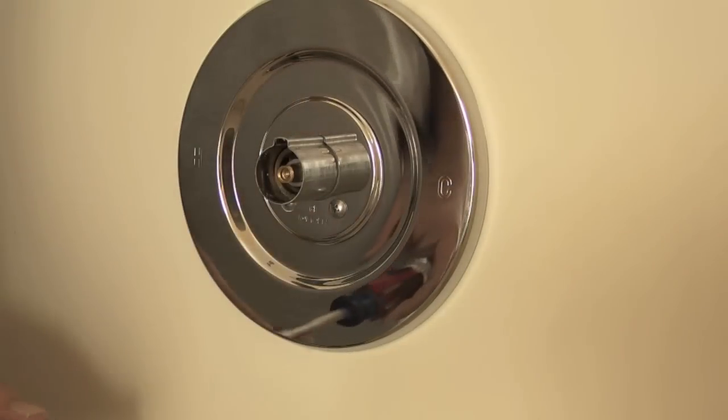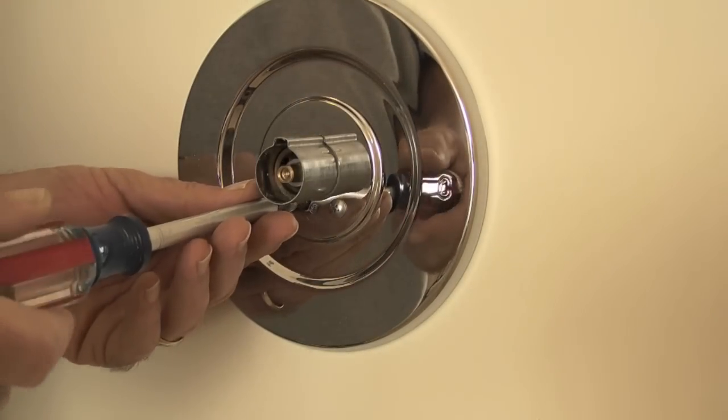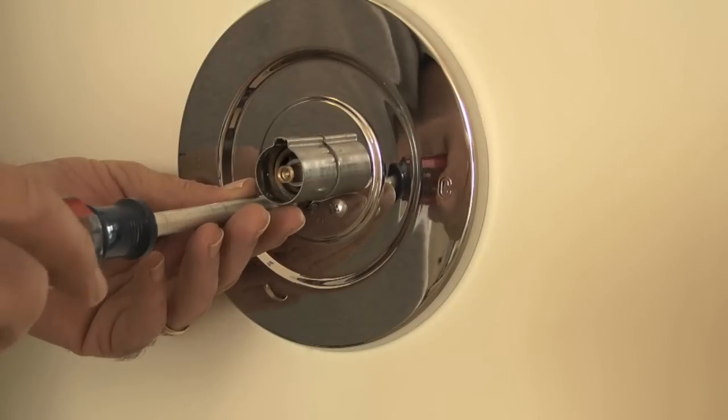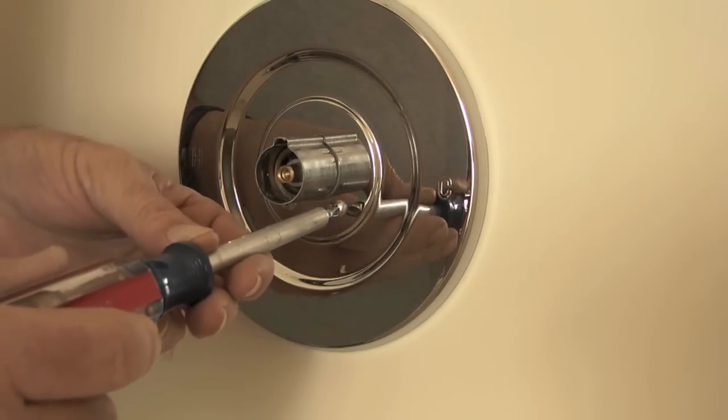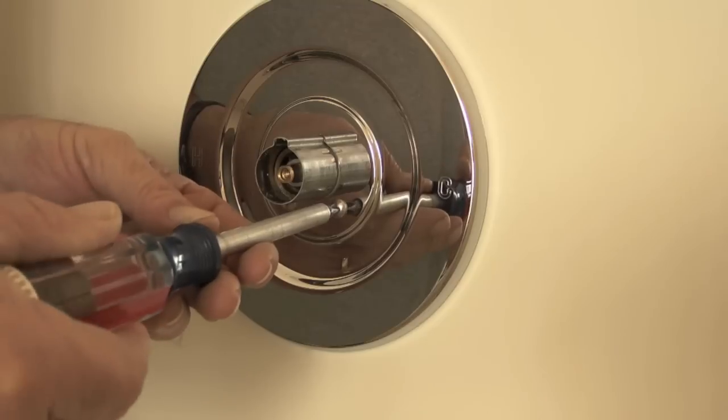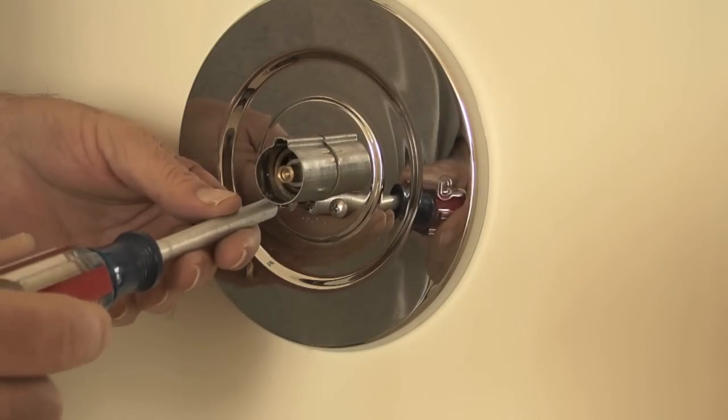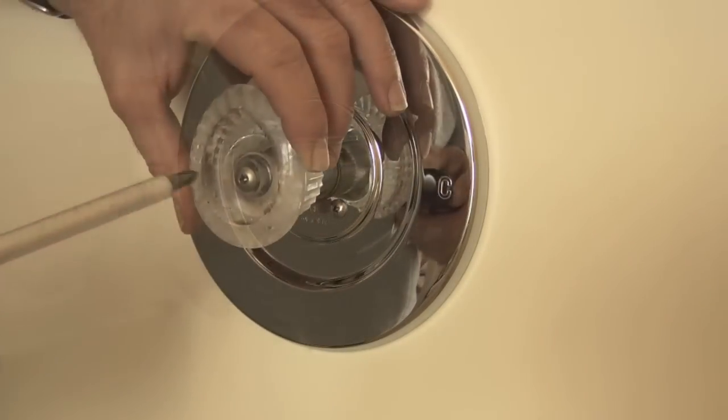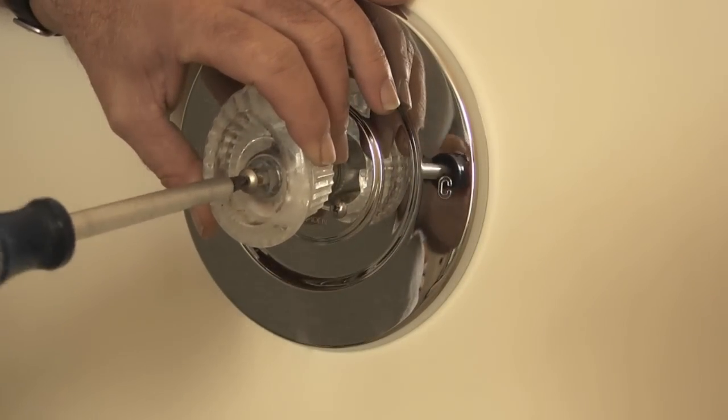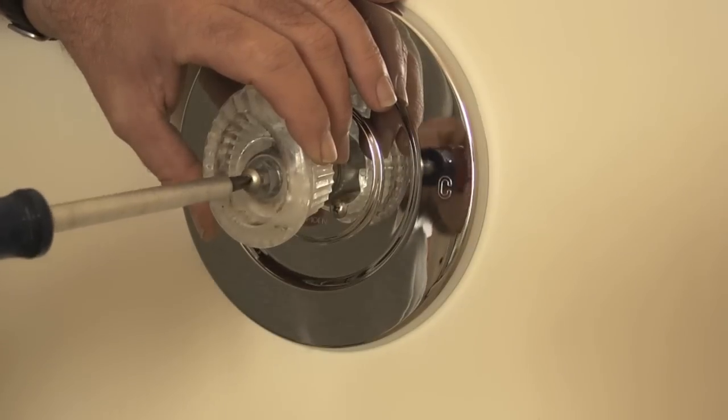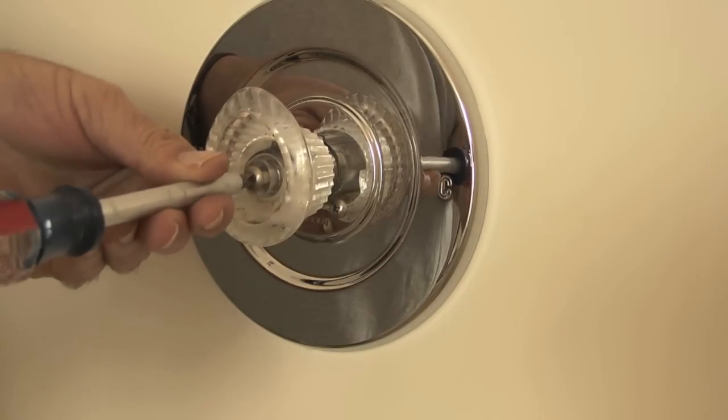The only thing I want to be careful with here is not to over-tighten the screws and put a dent in the new escutcheon. With the escutcheon plate installed, I will reinstall the shower knob by tightening the screw clockwise.